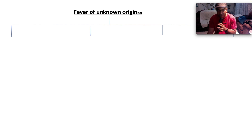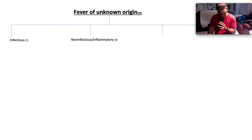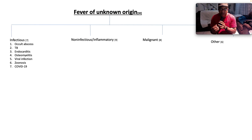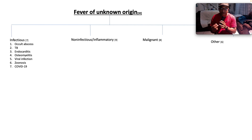Fever of unknown origin has 30 whopping causes divided into infectious, non-infectious/inflammatory, malignant, and others. Under infections we can divide them into occult abscess; TB — the master of disguise, especially in immunocompromised people; endocarditis, where you look for peripheral stigmata including Roth spots, Osler's nodes, Janeway lesions, splenomegaly, hematuria, and murmur; osteomyelitis; viral infections including COVID; and zoonoses.